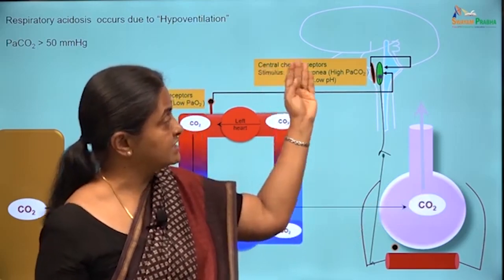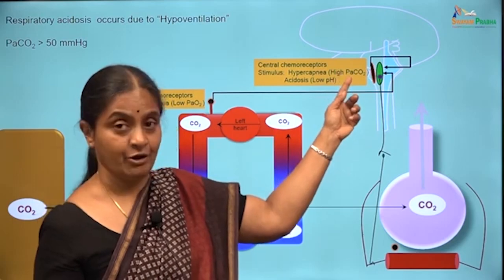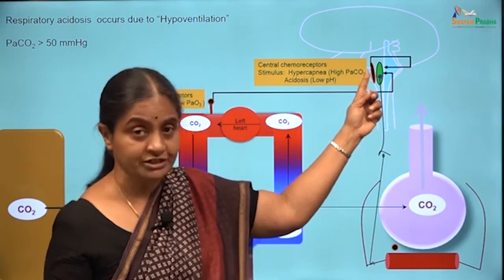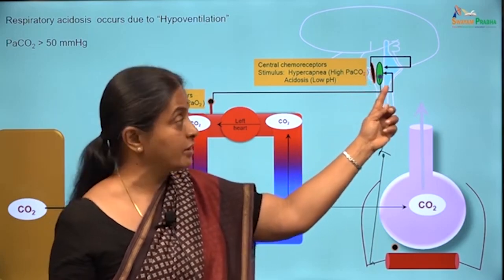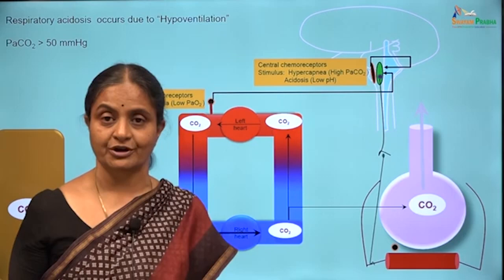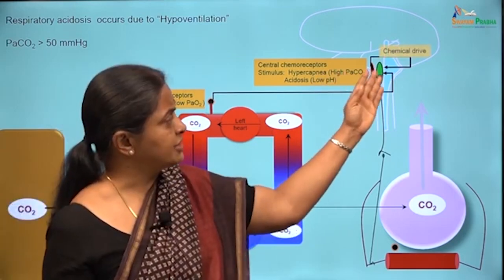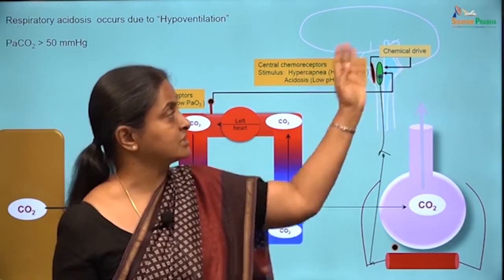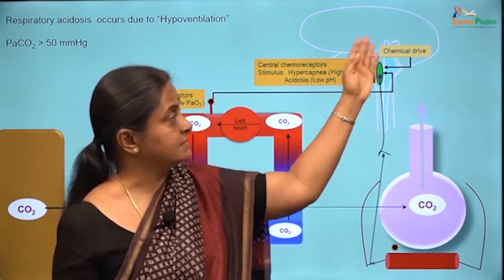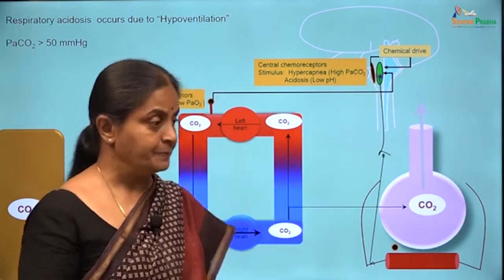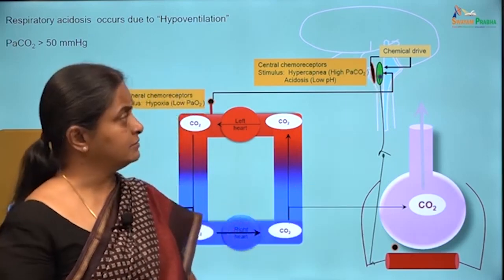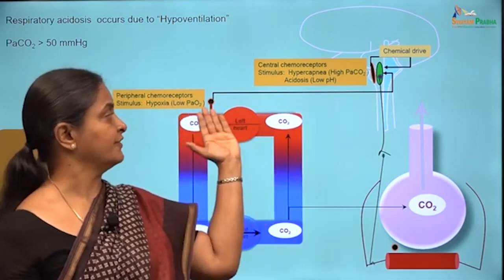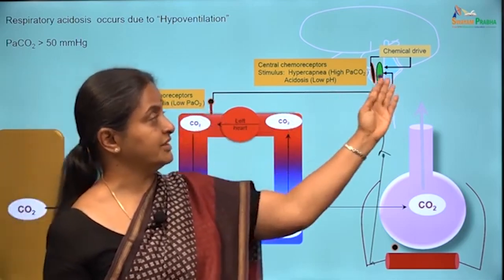So if there is respiratory acidosis and a high carbon dioxide, then obviously the chemoreceptors are not responding well enough — their set point has gone higher probably, or the respiratory center is not responding. This stimulus driving the respiratory center is called the chemical drive, where carbon dioxide or acid drives the respiratory center. The other drive is the hypoxic drive, where hypoxia can drive the respiratory center.